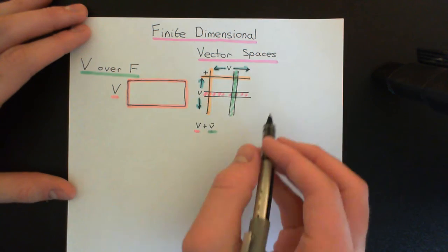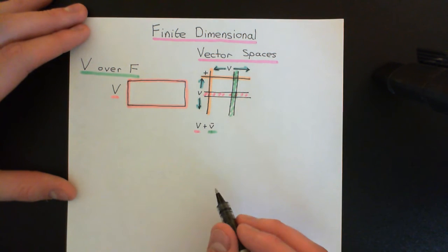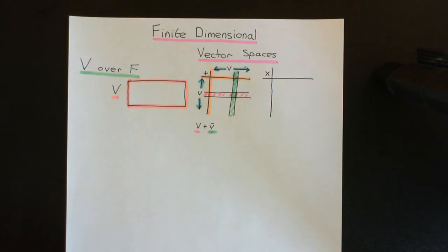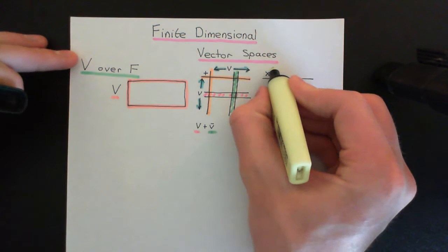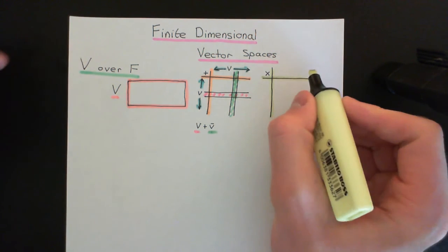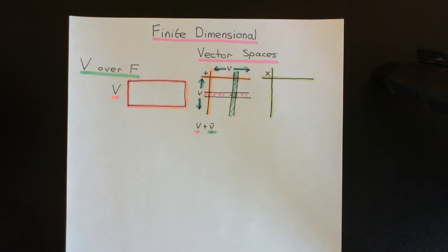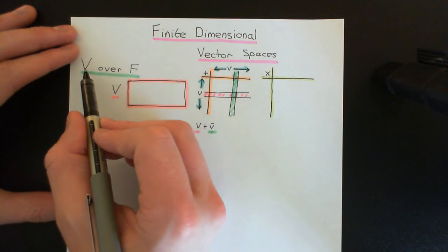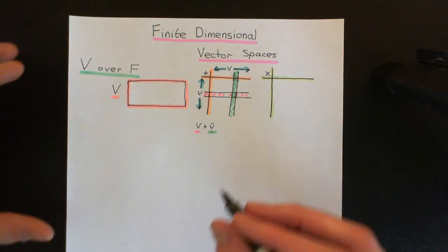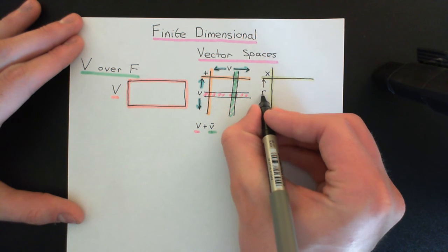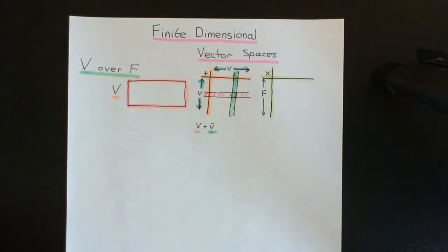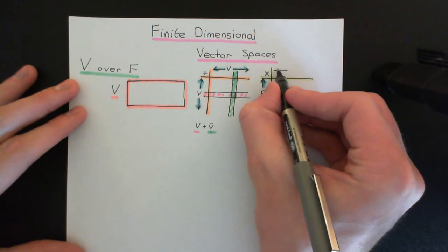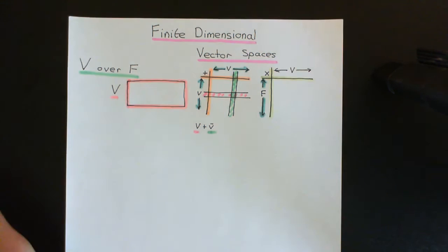To elevate this from being an abelian group to actually being a full-on vector space over the field capital F, we need a second composition law on this set of symbols. This second composition law is called scalar multiplication, and we'll colour the scalar multiplication composition table in yellow. This one is a bit more complicated because it doesn't involve composition of a vector with a vector. Instead, it involves composition of some symbol from the field — called a scalar — with some vector. You put all the elements of your field algebra here, giving every single one a row in this scalar multiplication composition table.